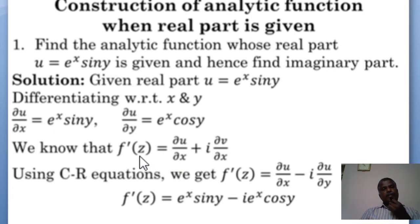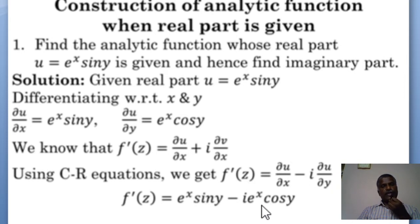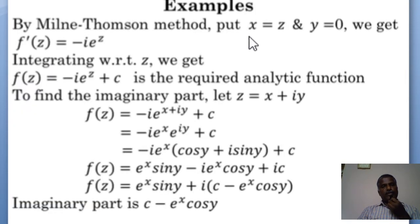Since f(z) is analytic, f'(z) = ∂u/∂x + i·∂v/∂x. We replace ∂v/∂x using the Cauchy-Riemann equations, that is −∂u/∂y. Substituting ∂u/∂x and ∂u/∂y, we get e^x sin y − i·e^x cos y. By the Milne-Thomson method, we put x = z and y = 0, so f'(z) = −i·e^z.